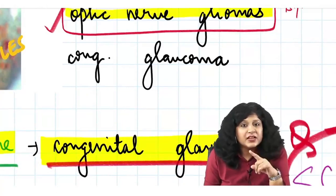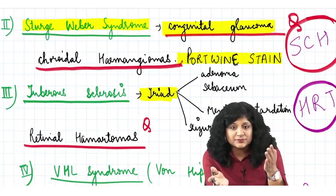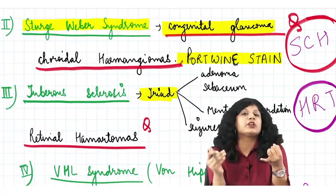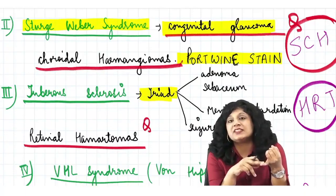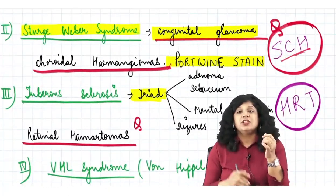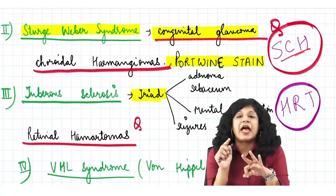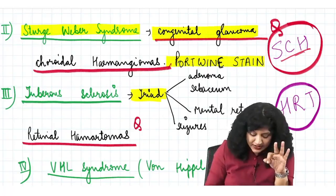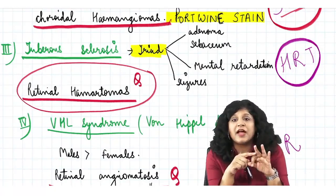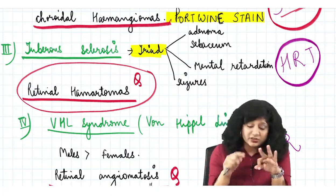What are the other phakomatoses with ocular manifestations? Sturge-Weber syndrome is one — its most important ocular manifestation is congenital glaucoma. Remember the mnemonic SCH: S for Sturge-Weber, C for choroidal, H for hemangioma. So Sturge-Weber syndrome gives you choroidal hemangiomas. Then there is tuberous sclerosis, which gives retinal hamartomas — but the diagnosis of tuberous sclerosis is not made by café-au-lait spots and axillary freckling.